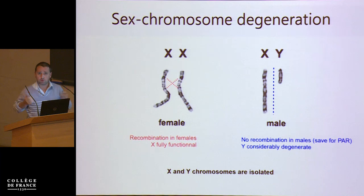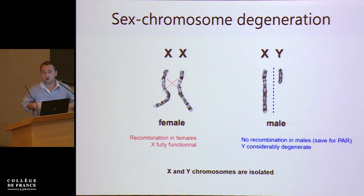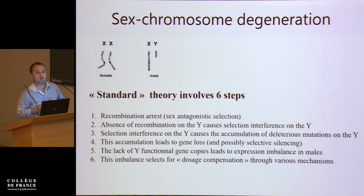As you probably know, sex chromosomes are in many cases degenerate. Here I represent a species where you've got X and Y, but the case applies for ZW species as well. The X is typically recombining in females and is fully functional, while there is no recombination in males between X and Y, and the Y is usually considerably degenerate. There is a standard theory that is well known for explaining why you get this degeneration, and the standard theory involves six steps.